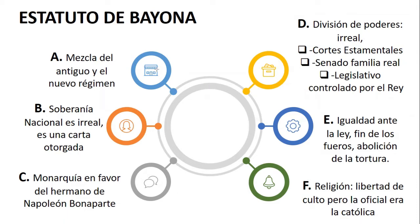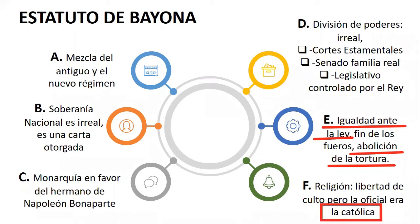Si bien es cierto se hablaba de igualdad de los súbditos ante la ley, se habló del fin de los fueros, del fin del tribunal de la Santa Inquisición, y se abolió la tortura —en teoría, pues en la práctica se seguía llevando a cabo. Respecto a la religión, se señalaba libertad de culto, pero la oficial era la católica, apostólica y romana. Estas son las principales características del Estatuto de Bayona del año de 1808.